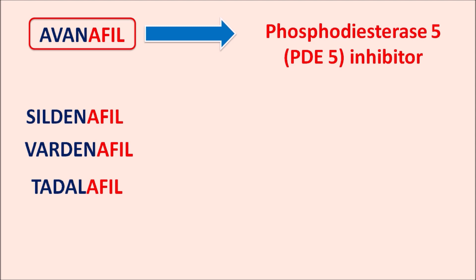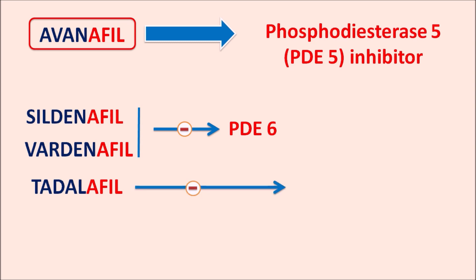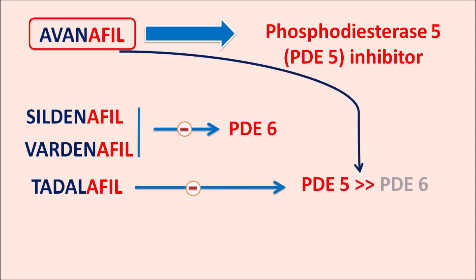The selectivity is somewhat different among these drugs. For instance, sildenafil and vardenafil are two drugs which also inhibit the activity of phosphodiesterase type 6 enzyme. But tadalafil and avanafil are more selective towards the phosphodiesterase type 5 enzyme.